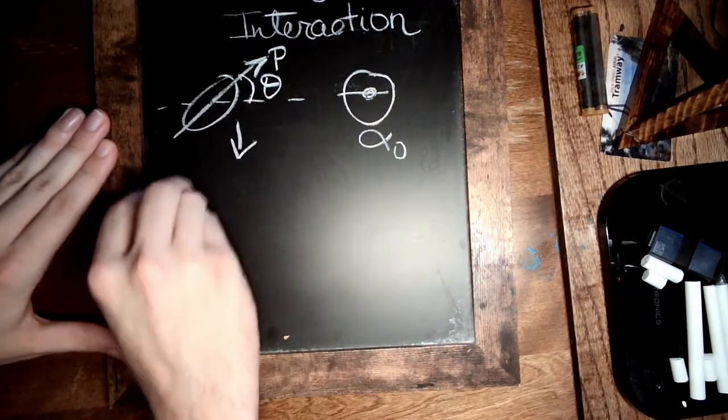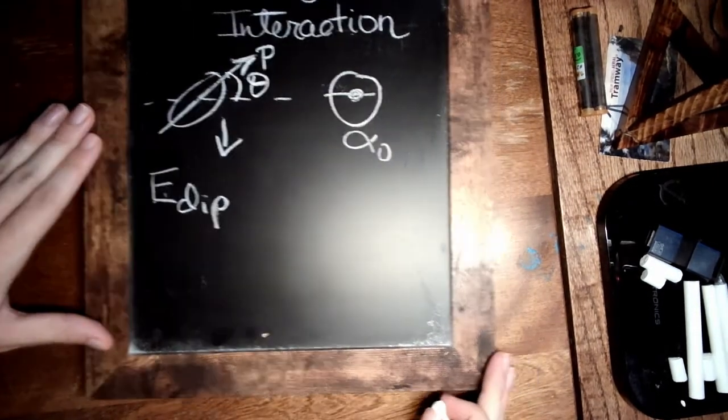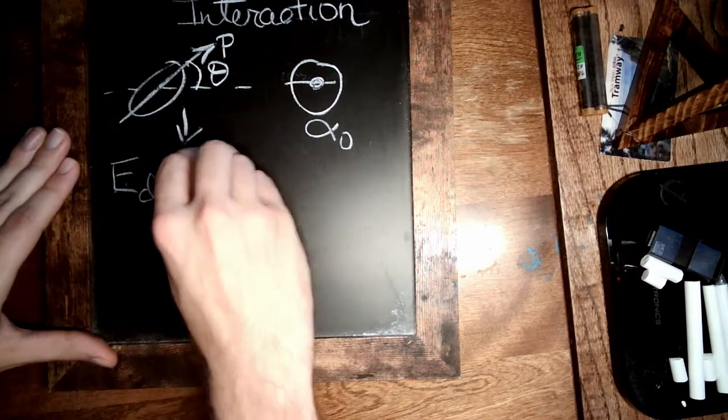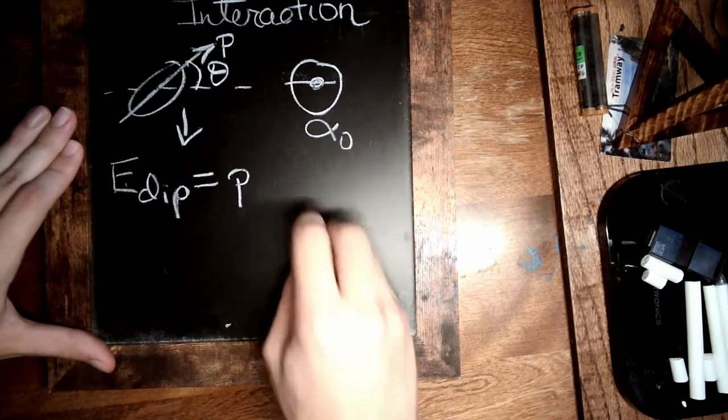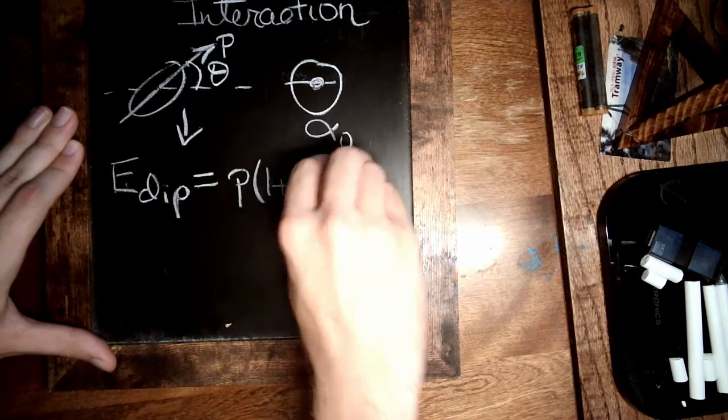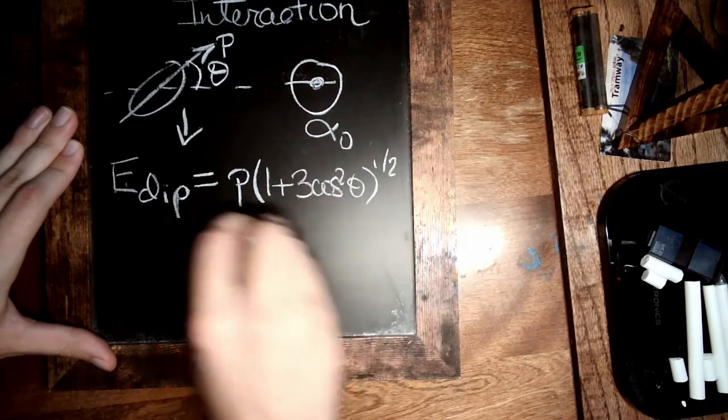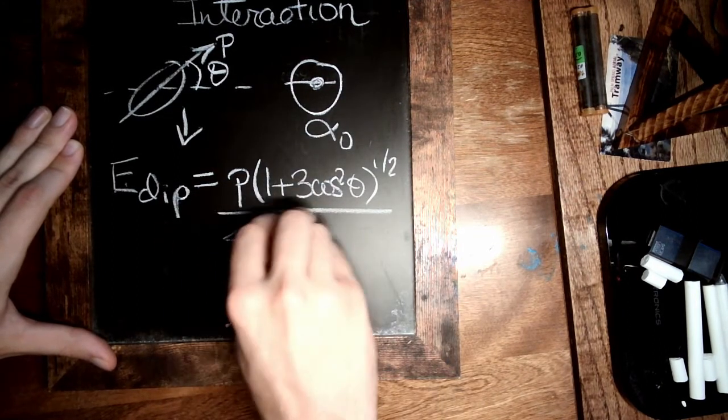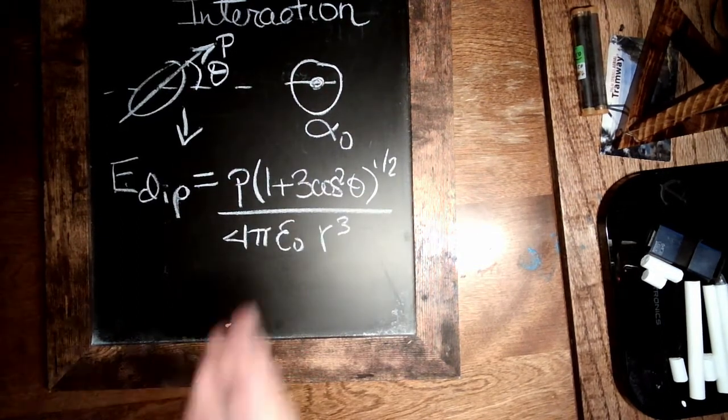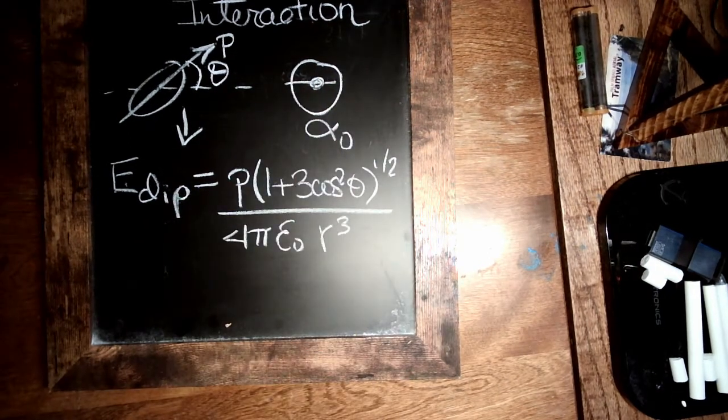the electric field given off by a dipole, we know from some of our earlier videos combining the Legendre polynomials and such, is going to be the magnitude of that dipole times one plus three cosine squared theta to the one half divided by our favorite constants, r to the third. So this is, I believe, the second Legendre polynomial, the magnitude the r to the cube ends up working out.